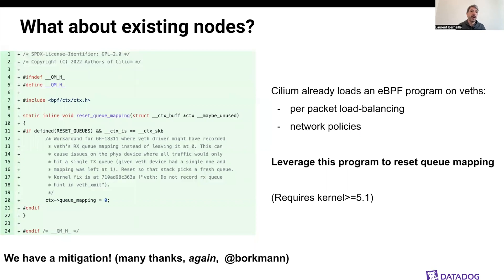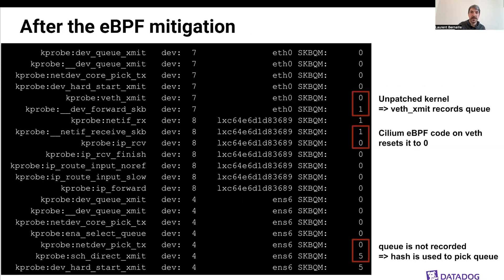What about existing nodes? The problem with a kernel patch is you need it to make it into the kernels you use, which can take time. Daniel, who had worked on the kernel patch, pointed out that the CDM agent is already loading eBPF code on the VX devices to perform load balancing and apply network policies — so maybe we can leverage this program to reset queue_mapping and address the bug. This is the mitigation: on nodes with unpatched kernels, BPF XMIT records the queue and sets queue_mapping to one. However, the new eBPF code on the CDM on the VX device resets it to zero as the packet is received on the host side. Because it's zero when we reach ENA select_queue, we go through the hash code, which picks the queue correctly.